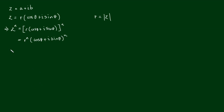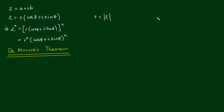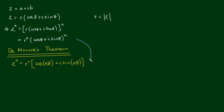By De Moivre's theorem — covered in a previous video, with a link in the description and top right corner — a complex number raised to the nth power can be expressed as r to the power of n times (cos(nθ) + i·sin(nθ)). Tying these two expressions together will be very helpful for working out multiple angle identities of sine and cosine.